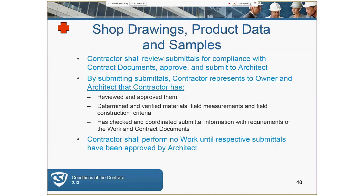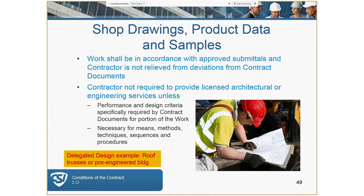The contractor shall review submittals for compliance with the contract documents, approve them, and then submit them to the architect. By submitting, the contractor represents that he or she has reviewed and approved them, determined and verified the contents, and checked and coordinated those submittals with the requirements of the work and contract documents. The contractor shall perform no work until those submittals have been approved by the architect. Work should be performed in accordance with the submittals — however, submittals do not overrule the construction documents.